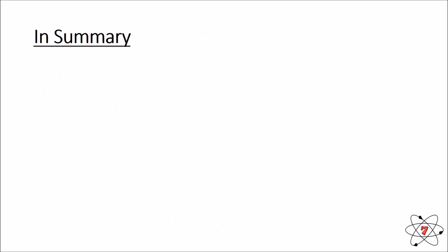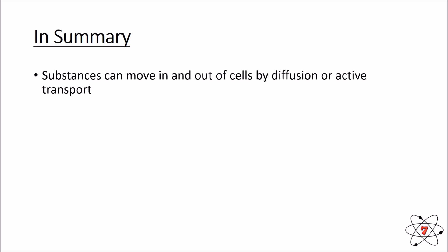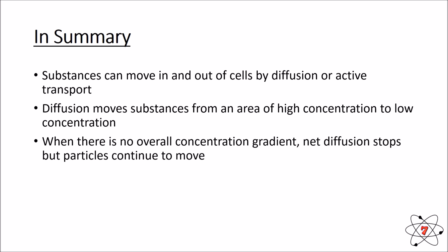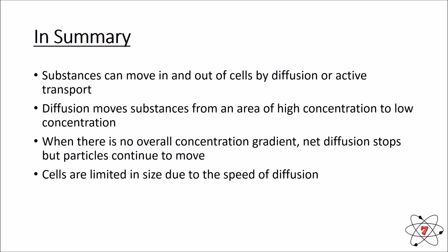In summary: substances move in and out of cells by diffusion or active transport. Diffusion always moves substances from an area of high concentration to an area of low concentration. When there's no overall concentration gradient, net diffusion stops, but particles continue to move — concentrations on both sides stay the same. Cells are limited in size due to the speed of diffusion. A large cell has too small a surface area to volume ratio, making diffusion take too long, and the cell will die.